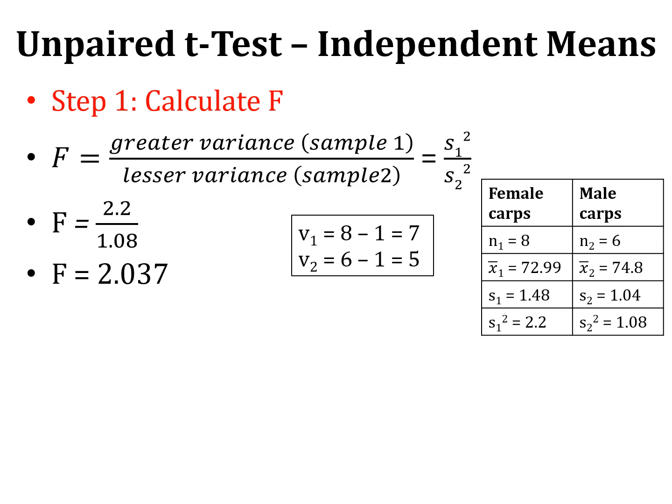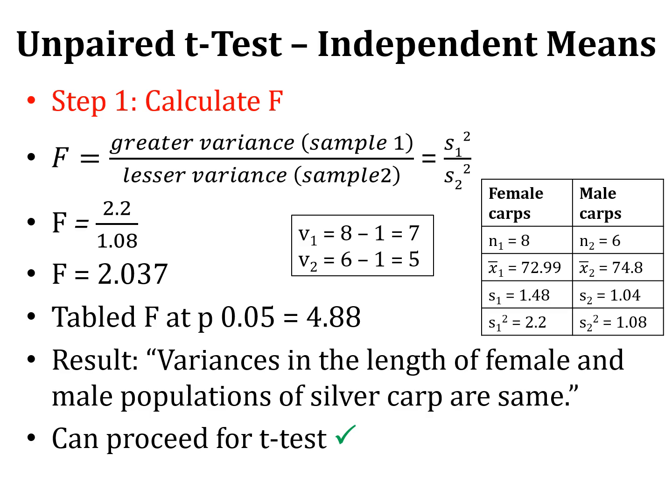The table value of F at probability 0.05 with V1=7 and V2=5 is 4.88. Our calculated value of 2.037 is less than the table value of 4.88, so we accept the null hypothesis for the F-test. We conclude that variances in the length of female and male populations of silver carp are the same. Therefore, we can proceed with the t-test.